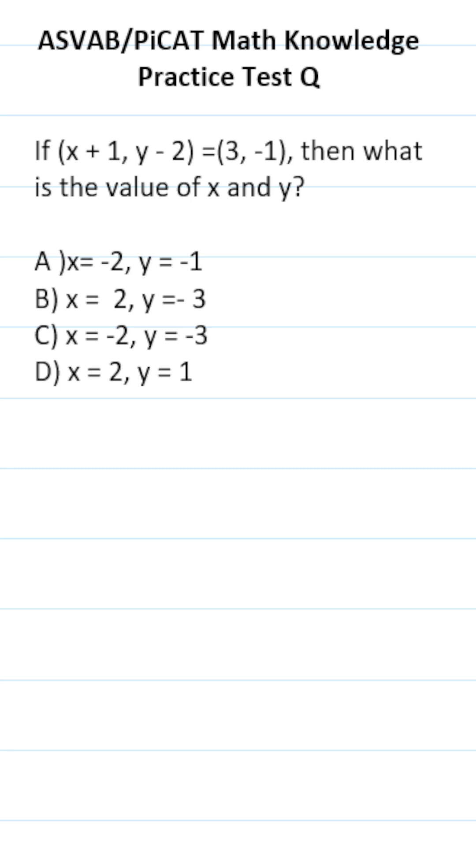For this one, you have to know that in ordered pairs, the first value is your x value and the second value is your y value. So in order to solve for x and y,